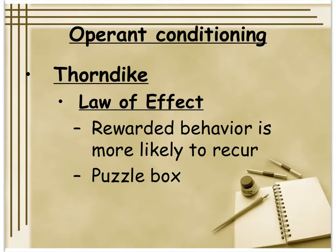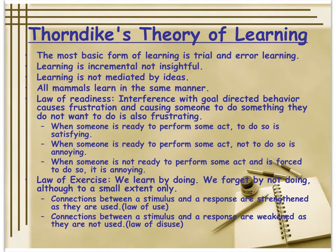Thorndike studied this by putting a cat inside a puzzle box, where the cat had to use trial and error to gradually figure out a way to get out. Once the cat figures out a way out, it gets rewarded with food — so it starts out trial and error and then becomes more purposeful. Thorndike had a lot of ideas about learning that, although the AP won't ask about all of them, are important because a lot of what comes after him is built off these things — changing some words, making things more measurable.